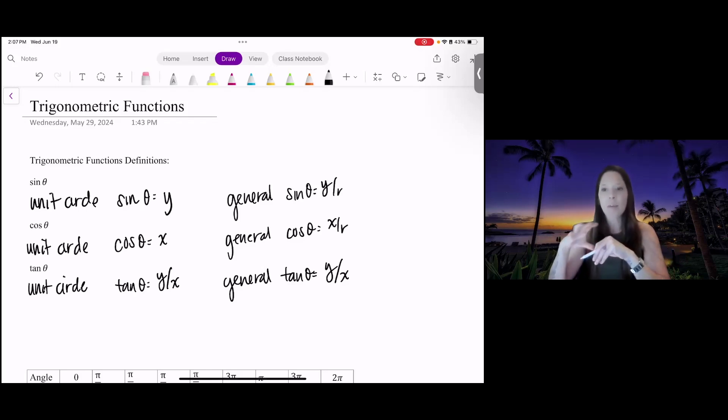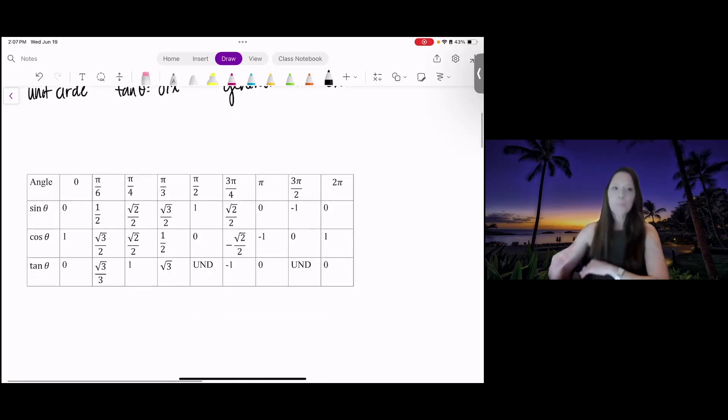Let's look at some common values for these three functions. In the first quadrant, we've got our 30, 60, 90 triangle and our 45-degree triangle values that have helped us in the unit circle. When you're talking about on the axes, at 0, sine is 0 and cosine is 1.